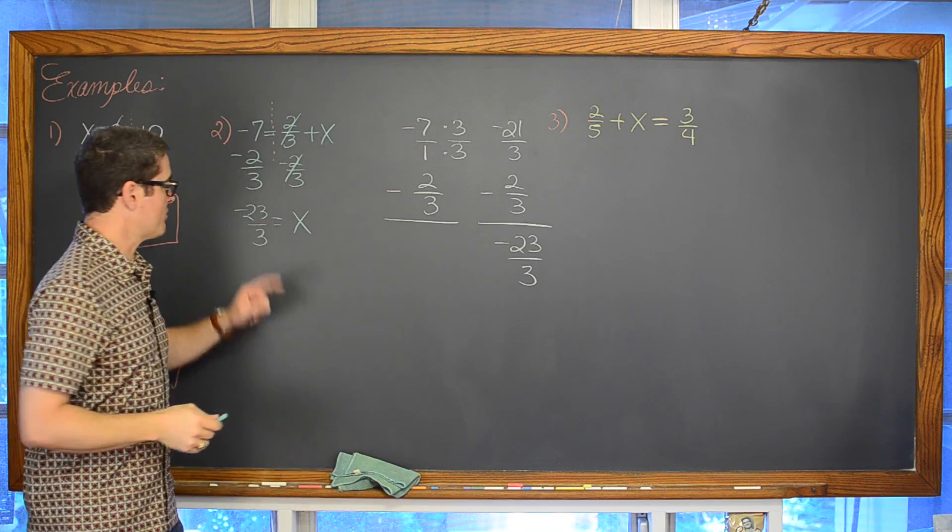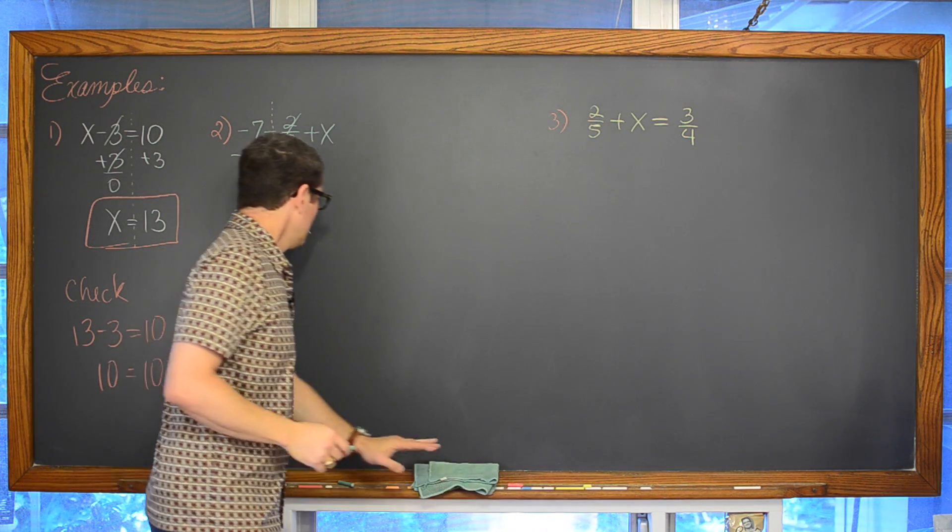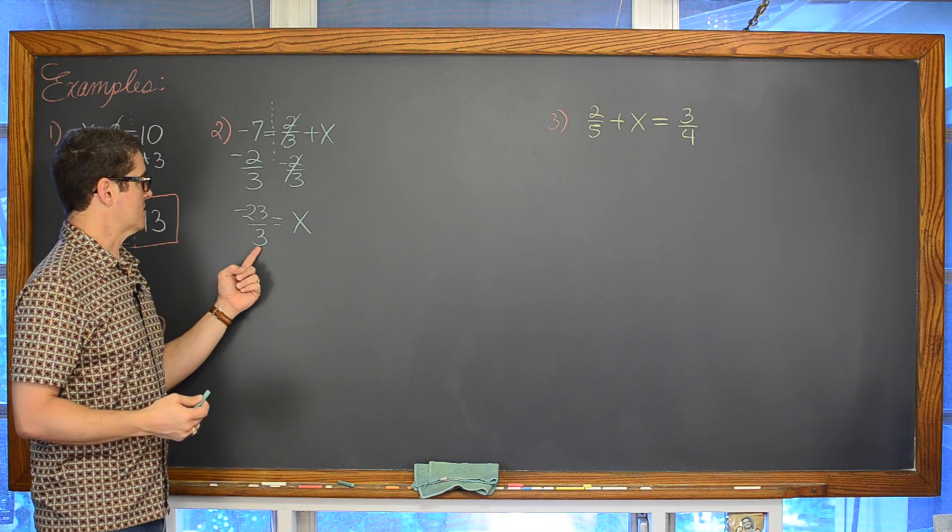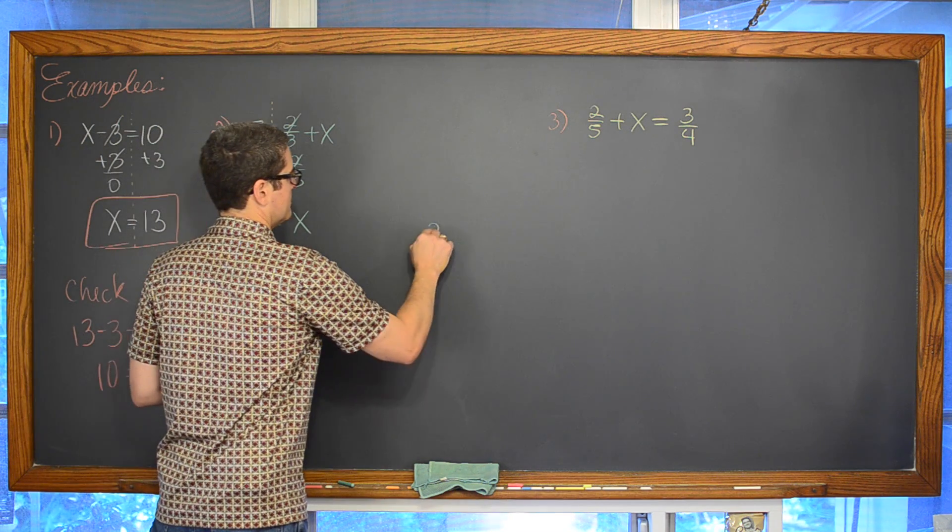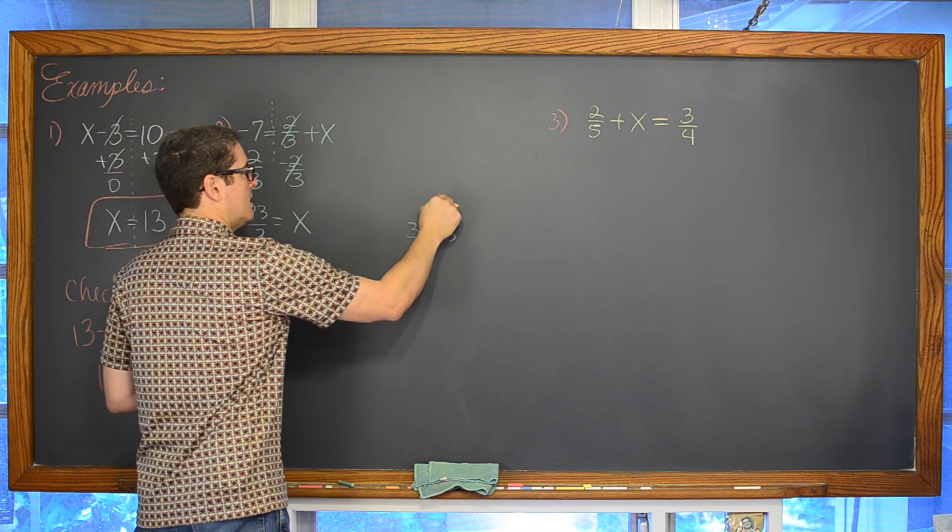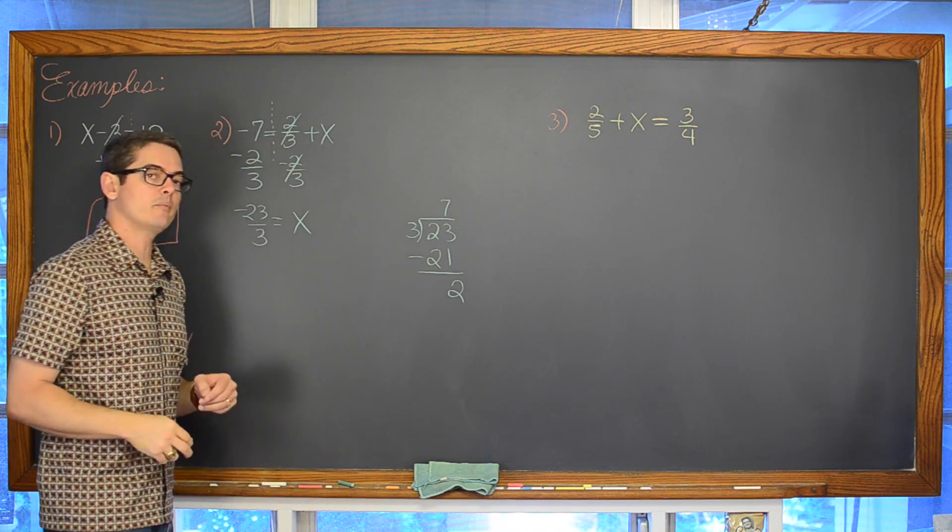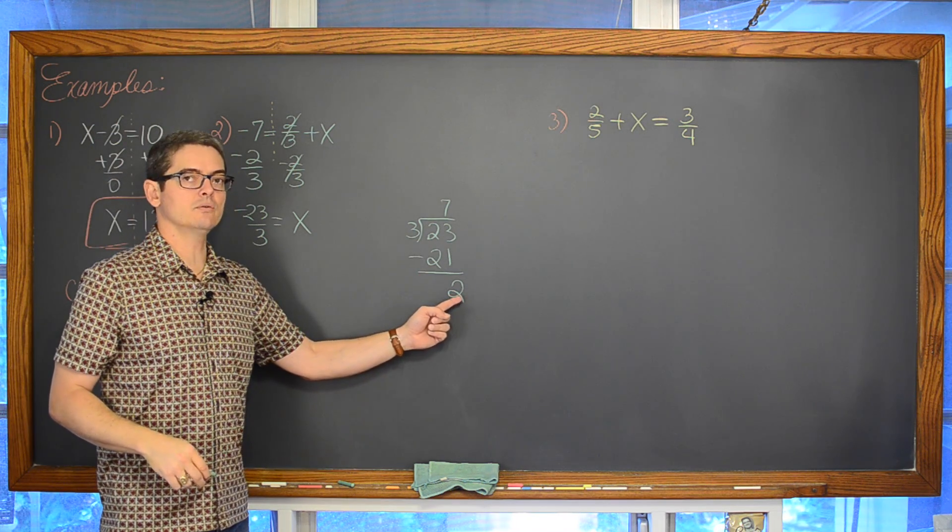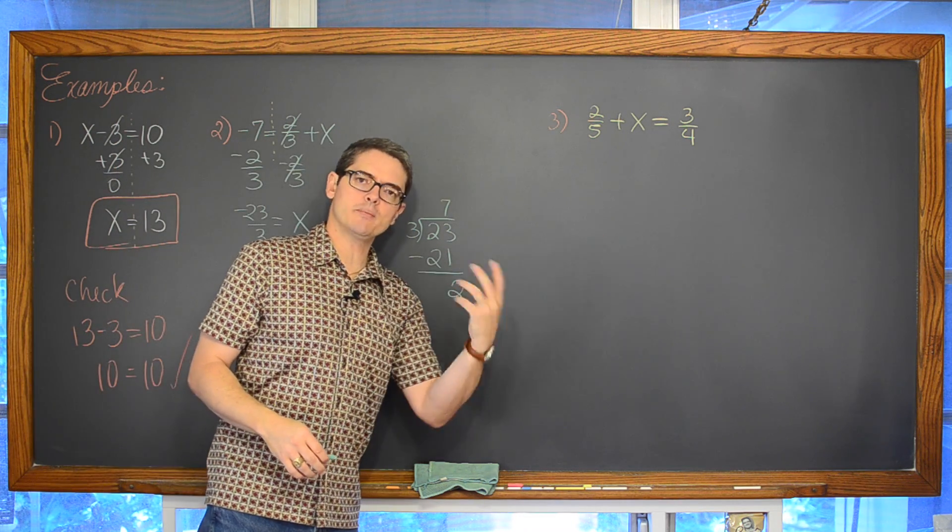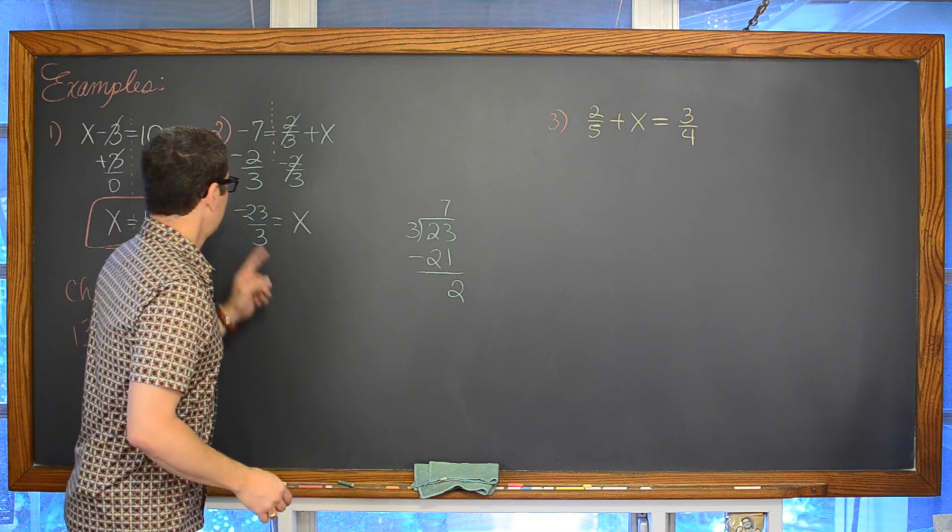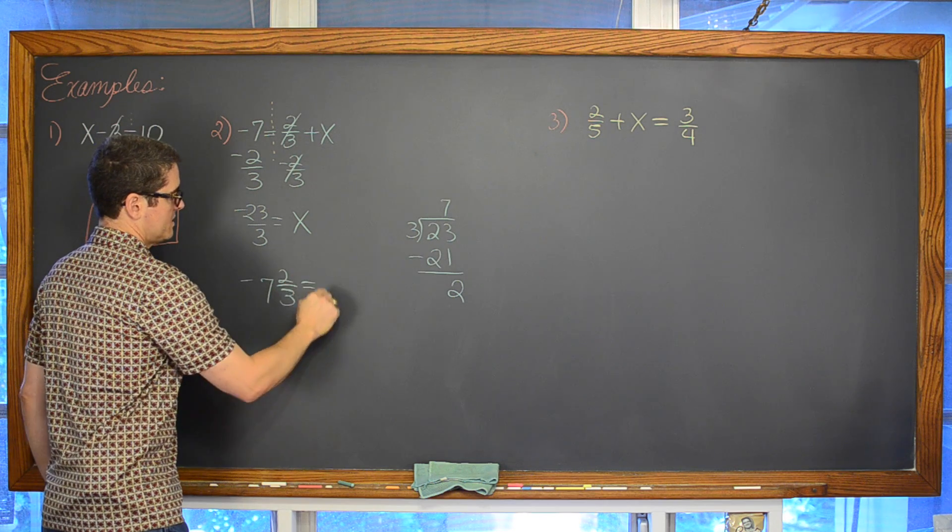Now turning this improper fraction into a mixed fraction, if your teacher would like to see the answer that way, you want to think to yourself, well, okay this is division, right? How many 3's are in 23? Well, that would be 7, right? 7 times 3 is 21. Take away the 21, that leaves you with a remainder of 2 and 3 will not go into 2. So that is my remainder and this is a mixed fraction is negative 7 and 2 thirds is what is equal to x.